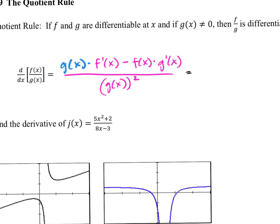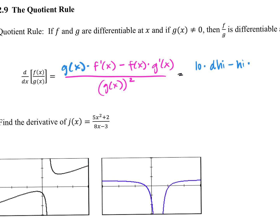Here's a fancy rule to help you. Do you agree this is the higher function and this is the lower function? So if we take the lower function — we're going to call this, and I promise you're going to want to write this down — this is going to be the lower function, 'low,' times the derivative of the higher. You want to know what we're going to call that? D high. So this is low D high minus high D low — and then all over low low.